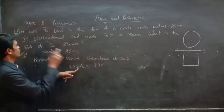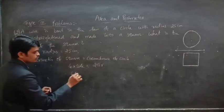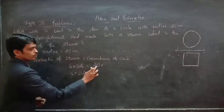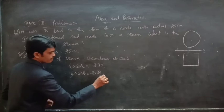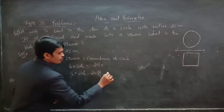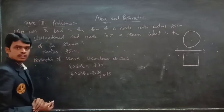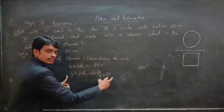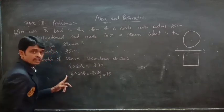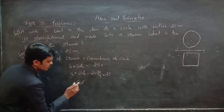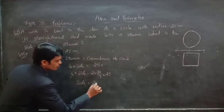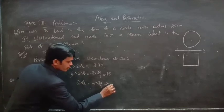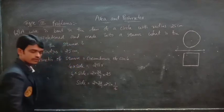Perimeter of square equals circumference of circle. Formula for perimeter of square is 4 into side. Circumference of circle when radius is given is 2πr. So 4 into side equals 2 into (22/7) into 25. Transposing 4 to the other side, side equals 2 into (22/7) into 25 into (1/4).